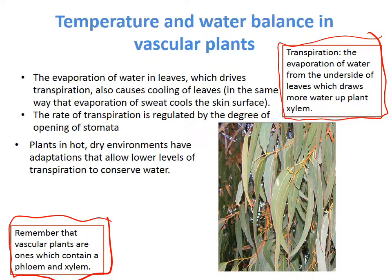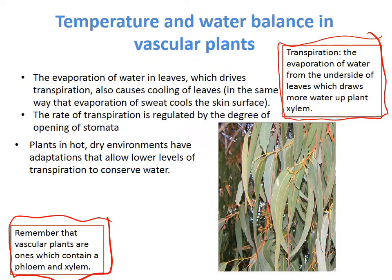It is the evaporation of the water inside those leaves that causes the cooling of the leaves, while at the same time pulling more water from the roots up towards the leaves for photosynthesis. The rate of transpiration is regulated by the degree of opening of the stomata. When the stomata are open, transpiration can occur; when closed, it can't. The amount the stomata are open influences how much water is lost and how cool the leaf needs to stay.